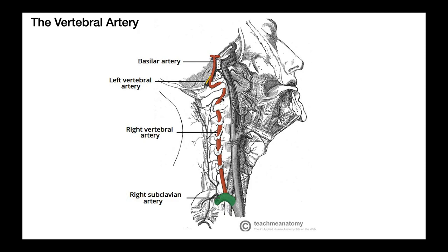Before we get into the vertebral artery, let's do a little review of the anatomy of the superior part of the heart. On the superior part, we have the arch of the aorta, or the aortic arch. The aortic arch has three large vessels that come off of it. The first one is the brachiocephalic artery, which we can see at the bottom of the picture. The other two, in order, are the left common carotid artery and the left subclavian artery.